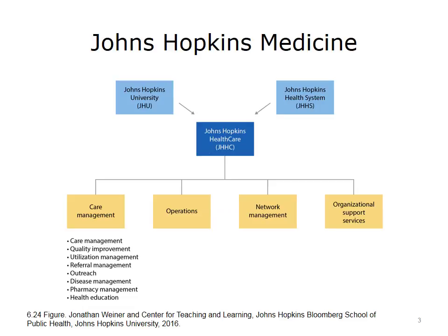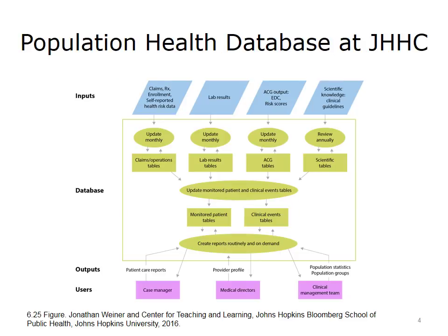This slide presents an overview of the Johns Hopkins Healthcare's organizational structure, with further details regarding the population-oriented care management services it provides. This chart depicts the flow of data for the cohort of individuals enrolled at JHHC, taking claims data, lab and electronic medical record EMR data, and various ACG information, including the specific expanded diagnosis clusters (EDC), diagnostic components, and risk scores.